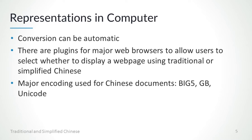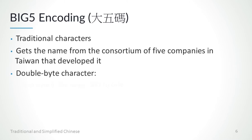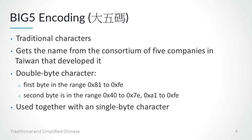When talking about traditional and simplified characters in the computer, we have to know the encoding schemes. Big5 is an encoding for traditional characters. The scheme gets its name from the consortium of five companies in Taiwan that developed it. The structure of Big5 is a double byte character set with a defined range for the first byte and the second byte. Strictly speaking, the Big5 encoding contains only double byte characters, but in practice it is always used together with another single byte character set such as ASCII. However, the encoding for that single byte character set is not specified in the Big5 encoding.